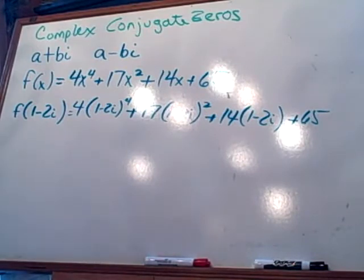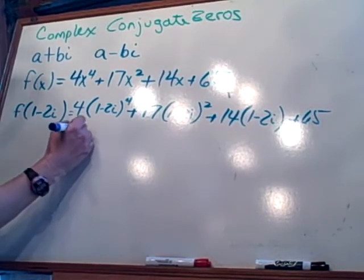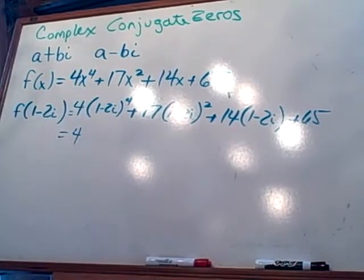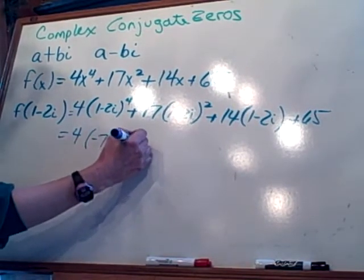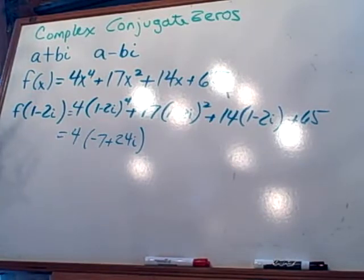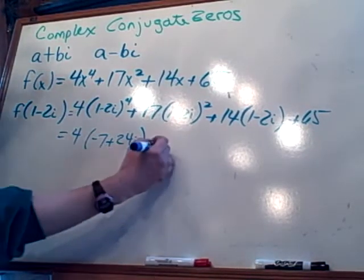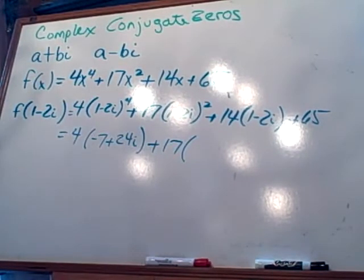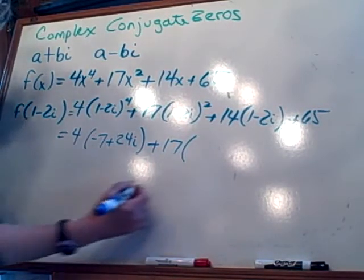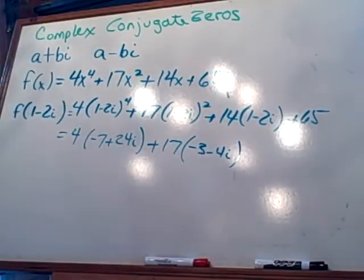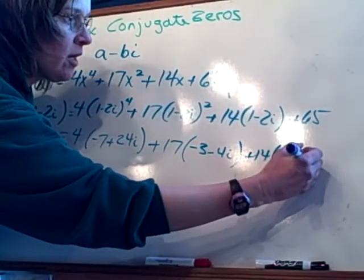Now, you know how we had that calculator thing when I was teaching you how to do complex numbers? That was for a reason. So what we're going to do — four times — we're going to figure out what (1 minus 2i) to the fourth is by plugging it into the calculator. Parenthesis 1 minus 2i to the fourth, and I get negative 7 plus 24i. I could write 1 minus 2i times itself four times and do all that, but I don't have time. Plus 17 times — let's do (1 minus 2i) squared. You can use your calculator: hit second enter, change your four to two, and you get negative 3 minus 4i. And then I'm going to rewrite: 14 times (1 minus 2i) plus 65.